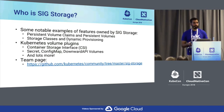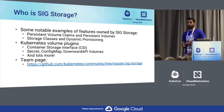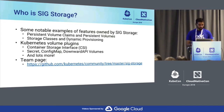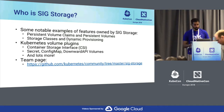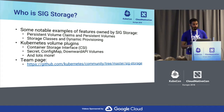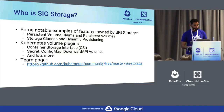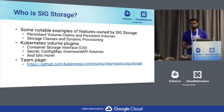Some notable examples of the features owned by our SIG include persistent volume and persistent volume claims — API objects in Kubernetes. Our team is responsible for that. Storage classes and dynamic provisioning are also under our purview. The entire Kubernetes volume plugin system is part of the storage SIG. And now we have a new initiative called the container storage interface, which is trying to move the volume plugins out of tree. If you've heard of secret, config map, or downward API volumes, these are ephemeral volumes also part of the storage SIG.